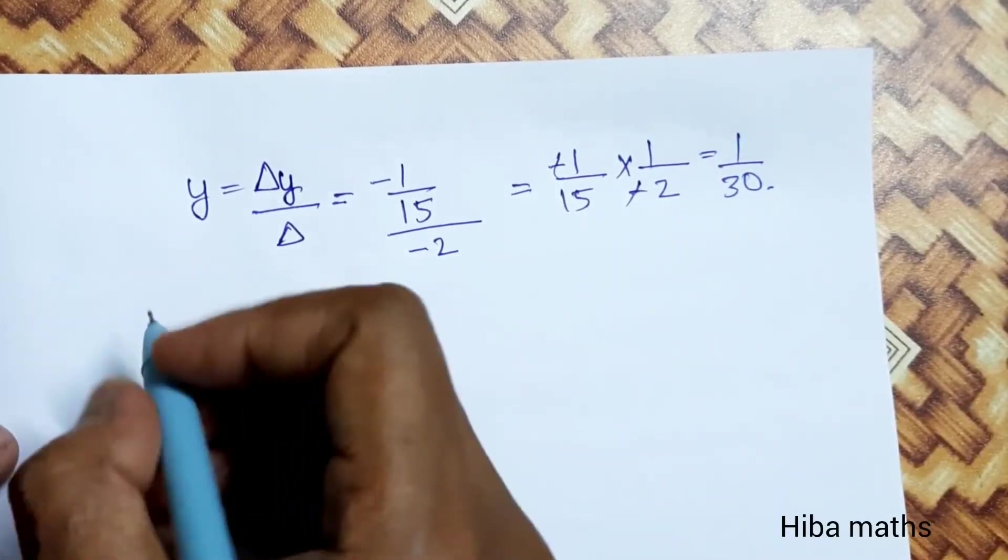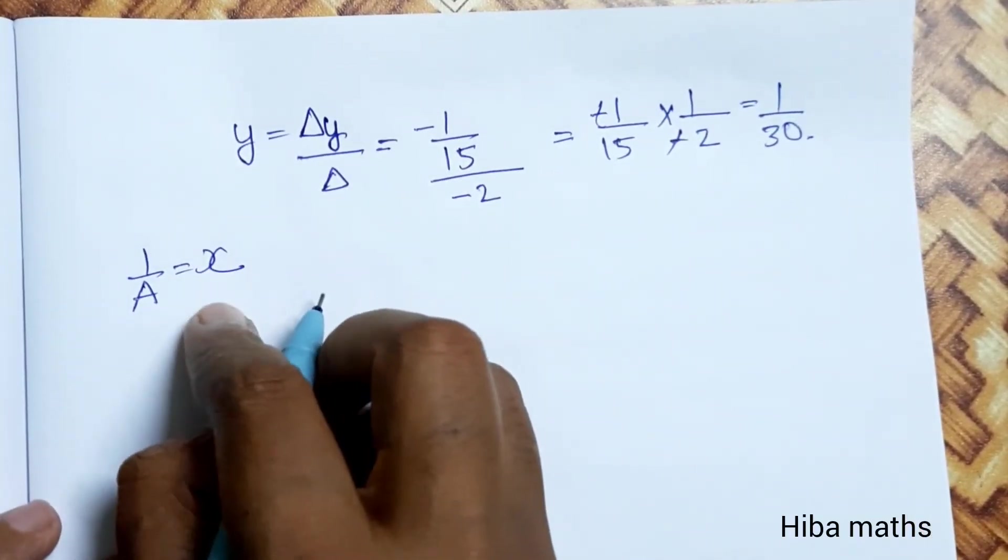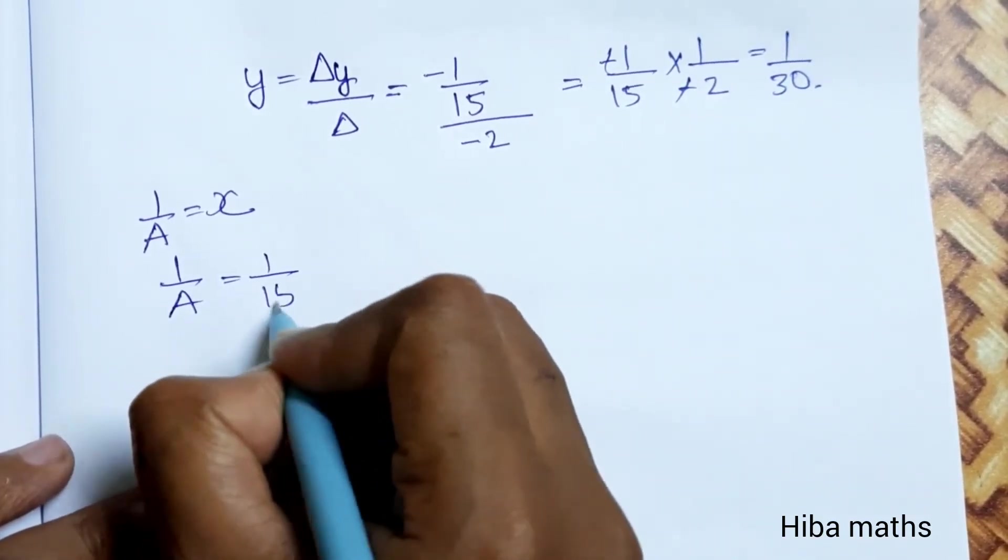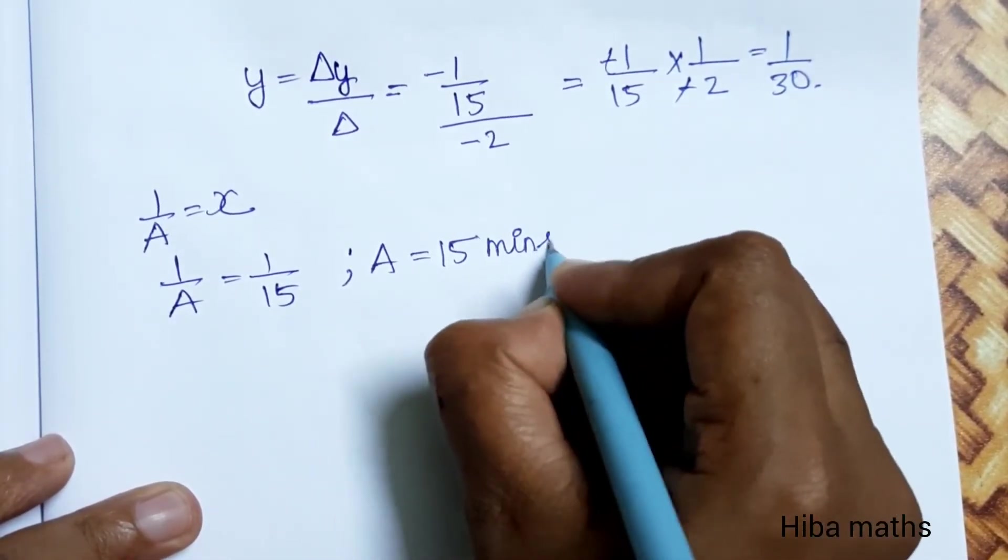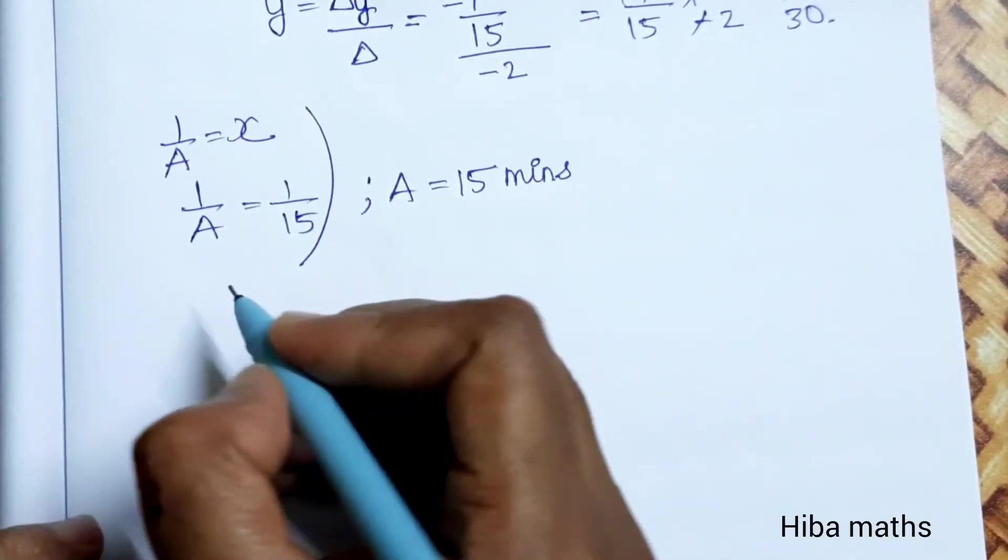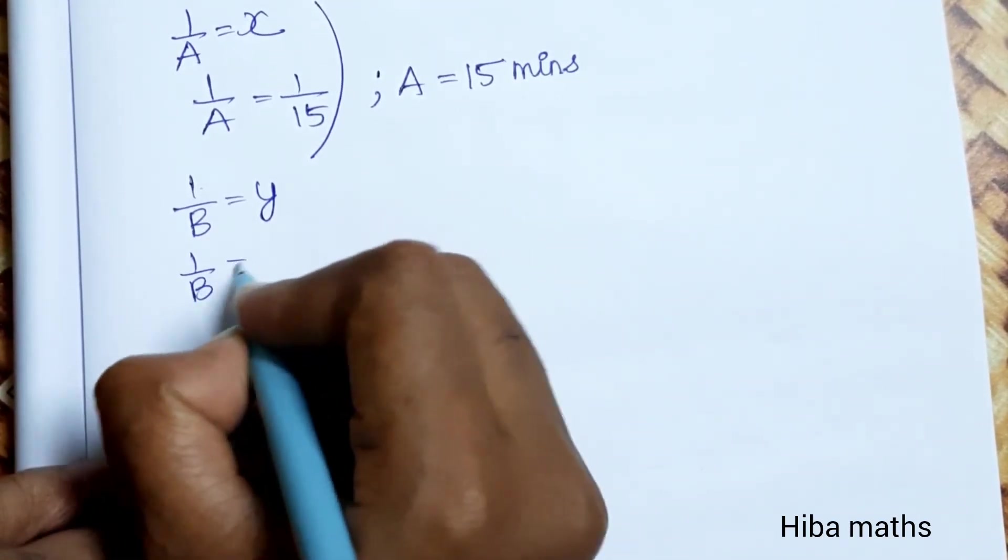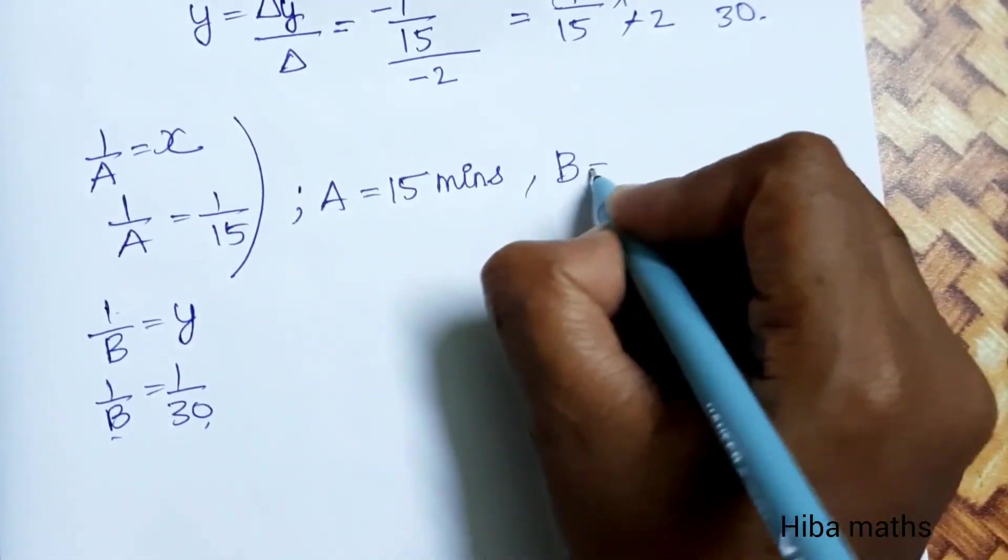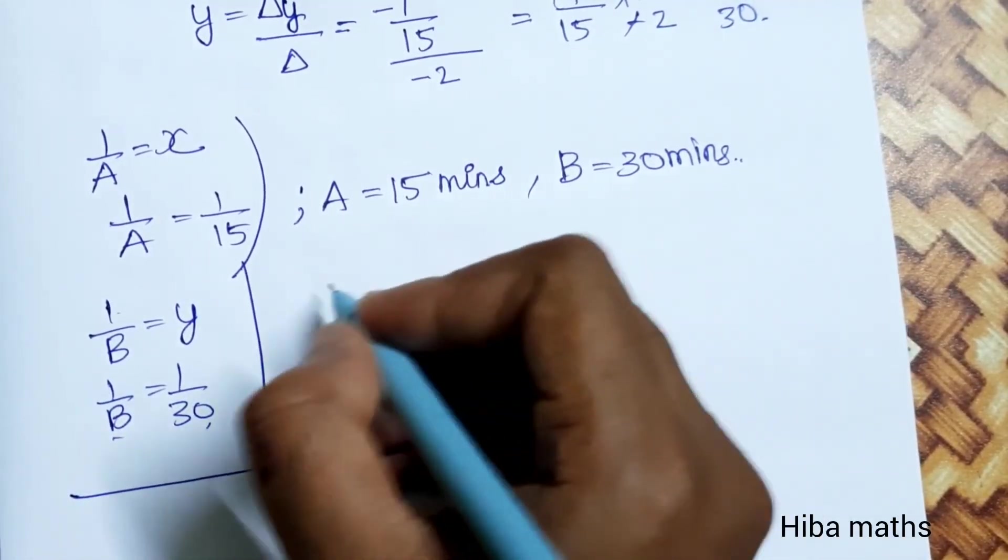So next, using Cramer's rule: x equals delta x over delta equals minus 2/15 divided by minus 2 equals 1/15. Since 1/A equals x, then 1/A equals 1/15, so A equals 15 minutes. Similarly, 1/B equals y, so 1/B equals minus 1/30, therefore B equals 30 minutes.